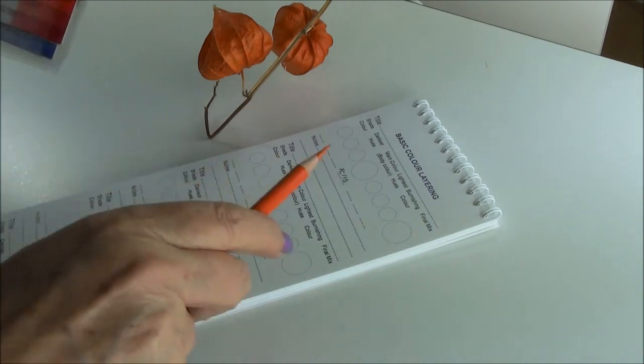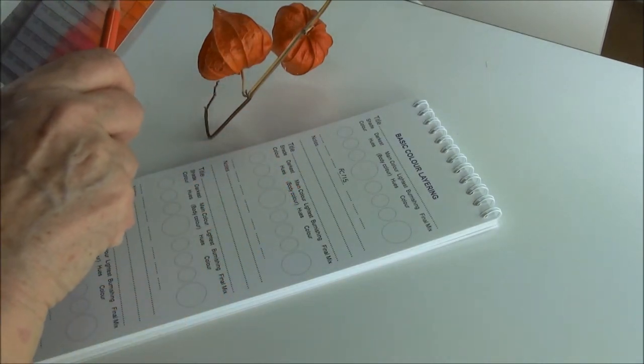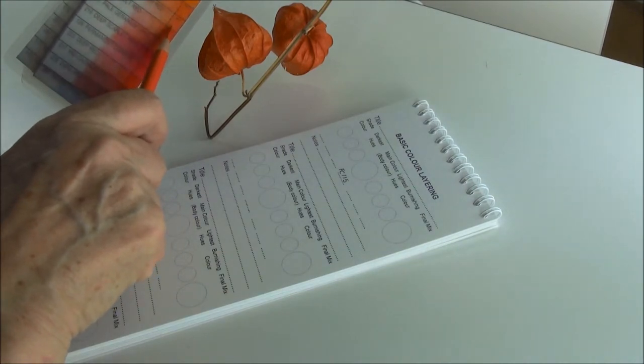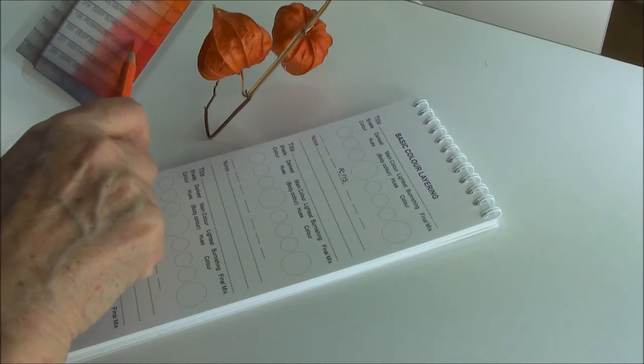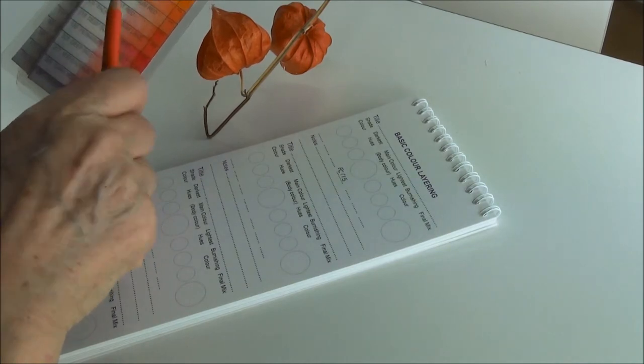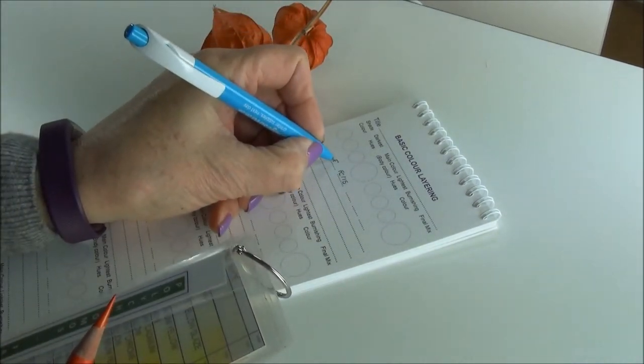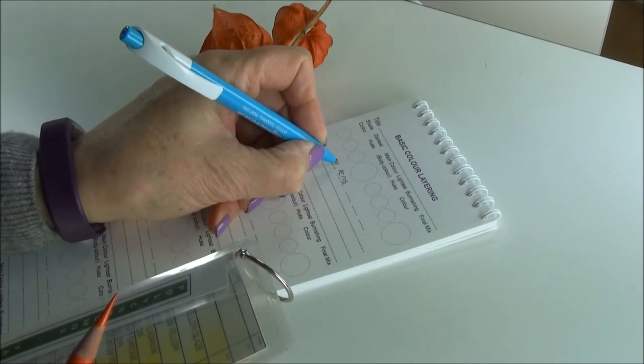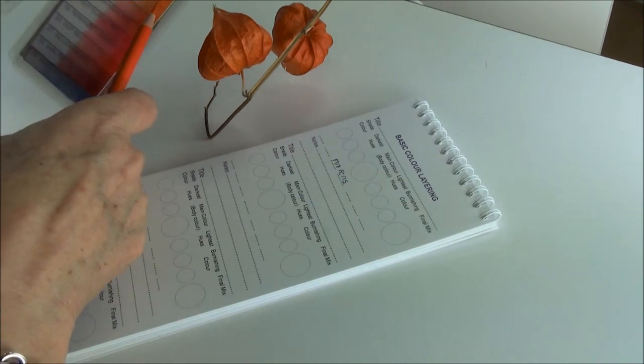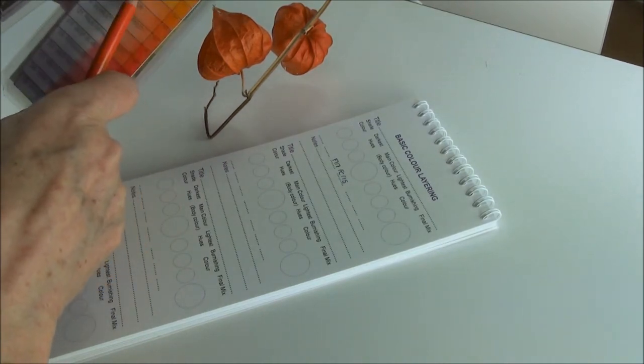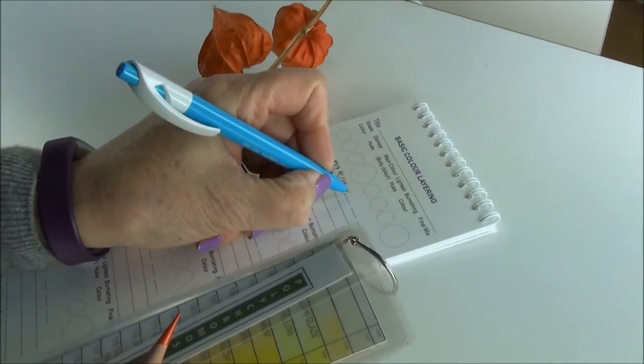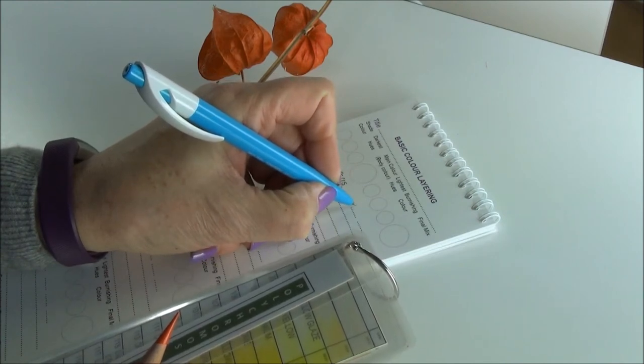Then I need to choose a lighter color and a darker color. For my darker color I think the nearest is 117 because further on we move into these colors are too red. So I'm going to go with Faber-Castell 117. That goes in my dark here, 117. And now I need a lighter color. So 115, I'm going to skip up to 111 which is a nice rich yellow orange, 111. So that's going to be my lightest color in my mix I think.